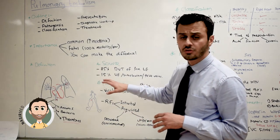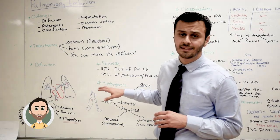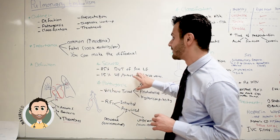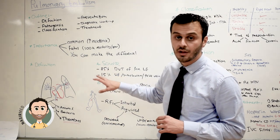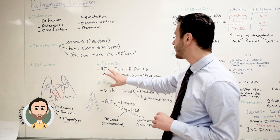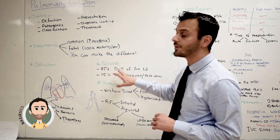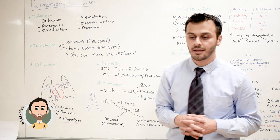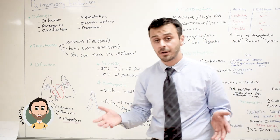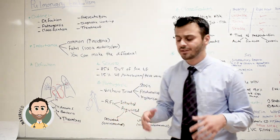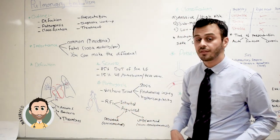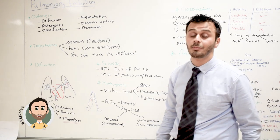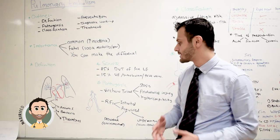However, the most common site is the proximal lower extremity. Around 85% of pulmonary embolism comes from a deep vein thrombosis of the proximal lower extremity — meaning the femoral veins, the iliac veins, or the popliteal veins.